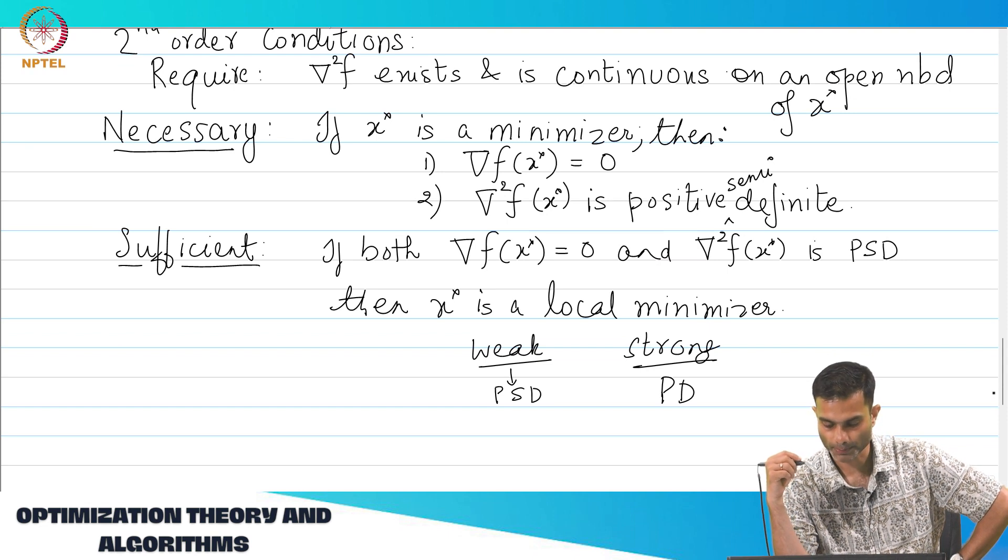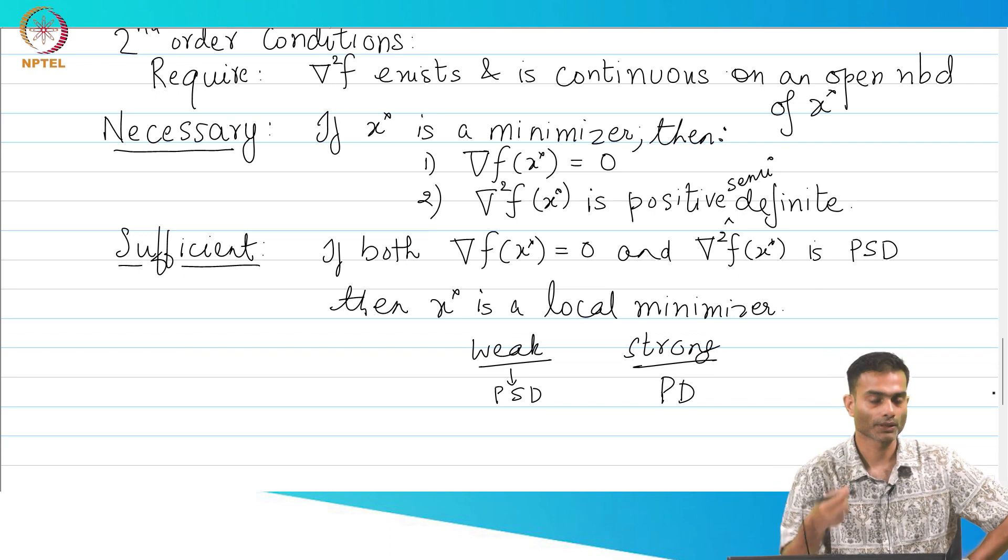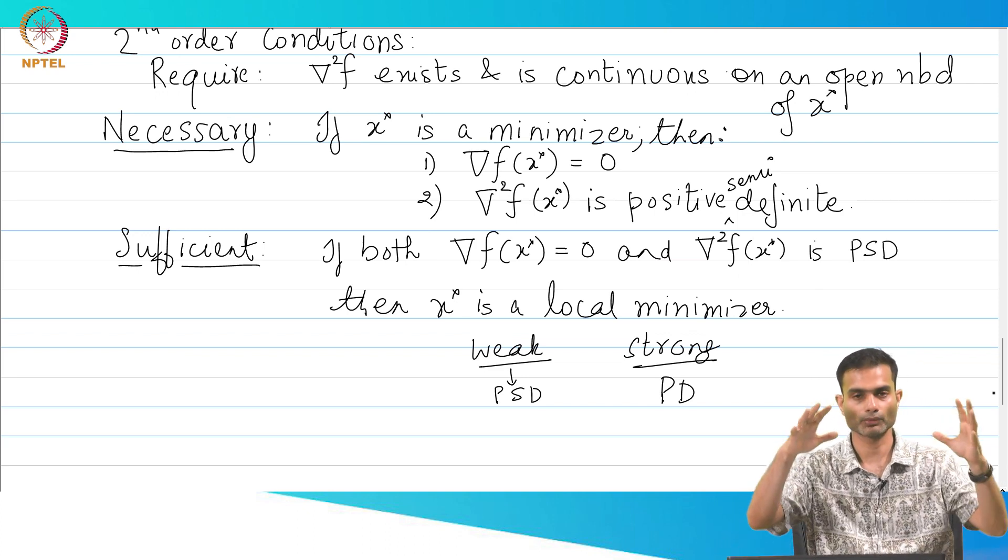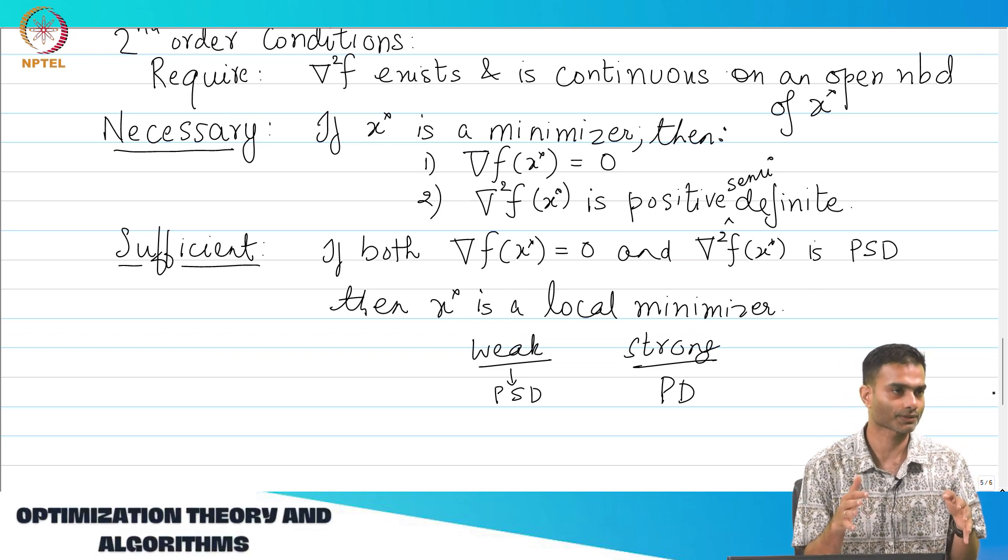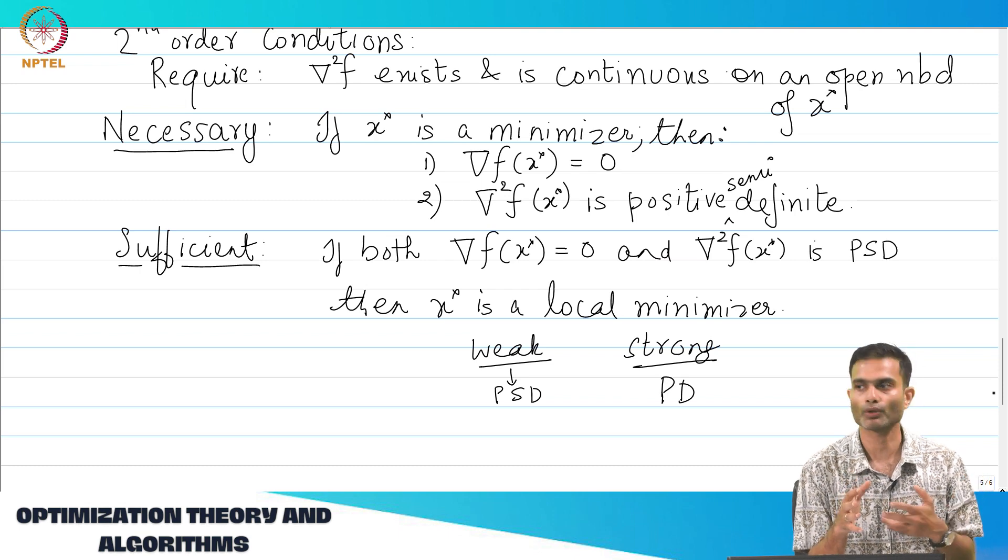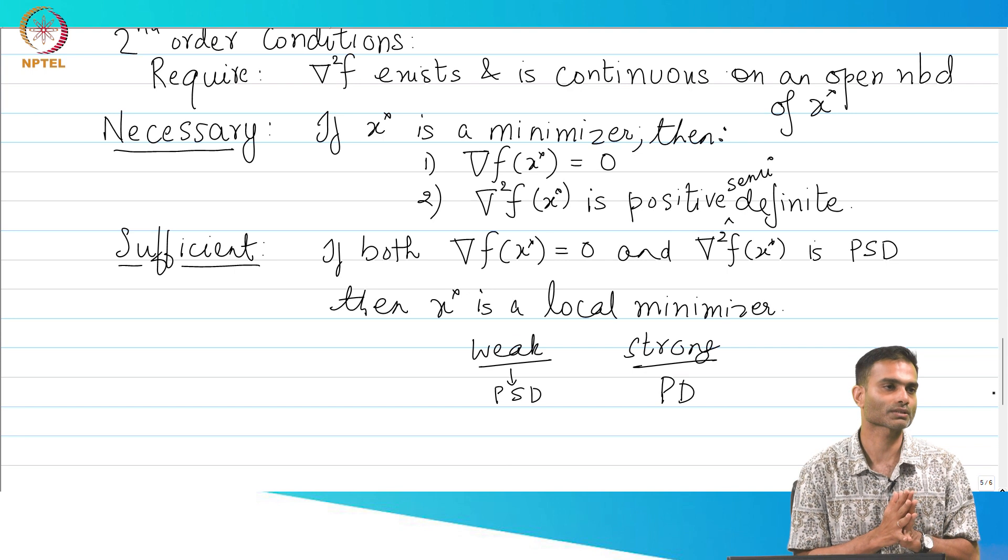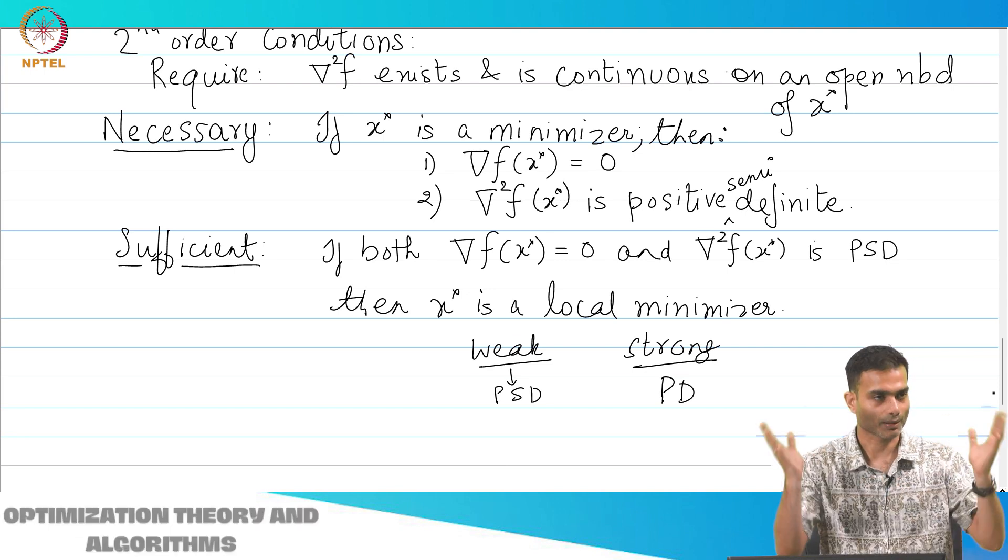Any intuition as to why it should be positive definite? The intuition if you want a geometric intuition, it is again similar to the one dimensional case. It is that if you look at, when I write a second order approximation, second order Taylor's approximation, what is the in one dimension what am I approximating my function as? A parabola.